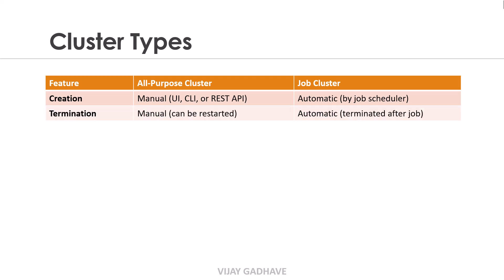The next feature is Termination. The All-Purpose Cluster is terminated manually, meaning the user must shut down the cluster when it is no longer needed; however, it can be restarted if required. The Job Cluster is terminated automatically once the job finishes, which helps in optimizing resource usage.